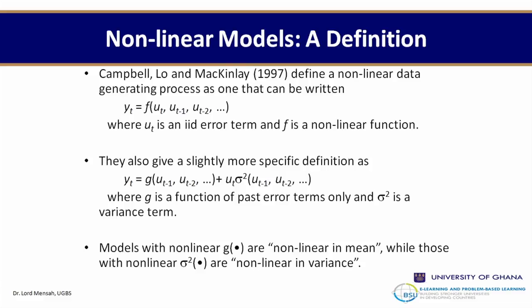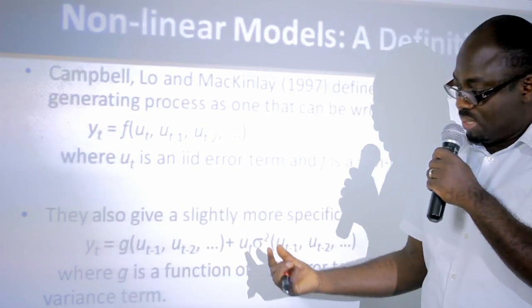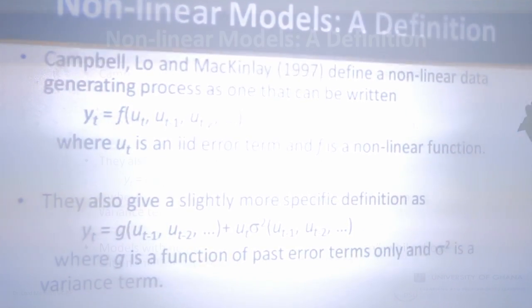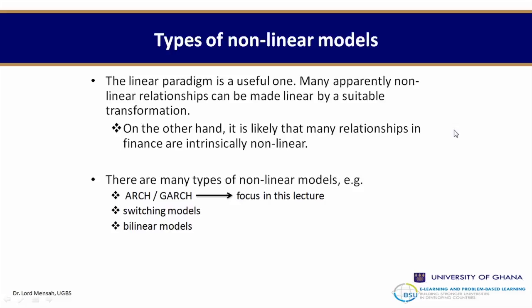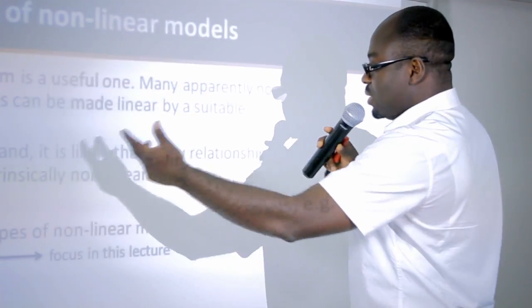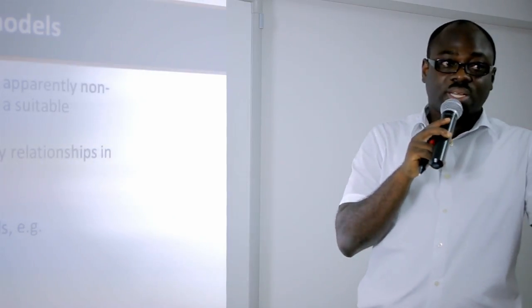Models with non-linear sigma are non-linear in variance, so the series Y_t has two parts: non-linear in mean and non-linear in variance. The linear paradigm is still useful, and many apparently non-linear relationships can be made linear by suitable transformation. However, many relationships in finance are implicitly non-linear. There are many types of non-linear models to consider — ARCH and GARCH models are the focus of this lecture, along with switching models and bilinear models.